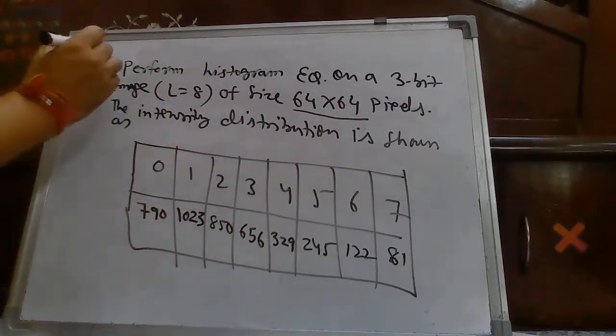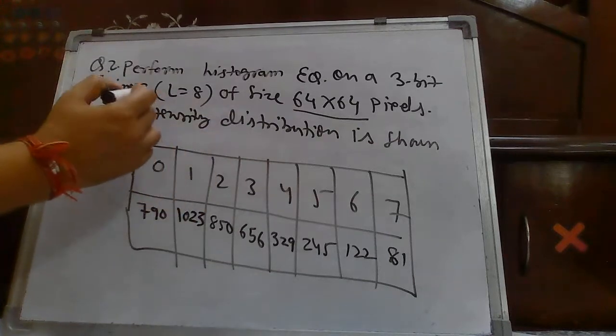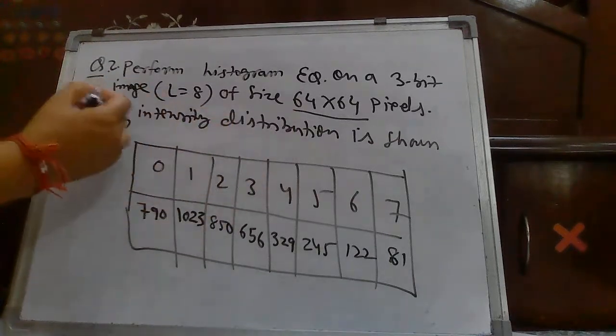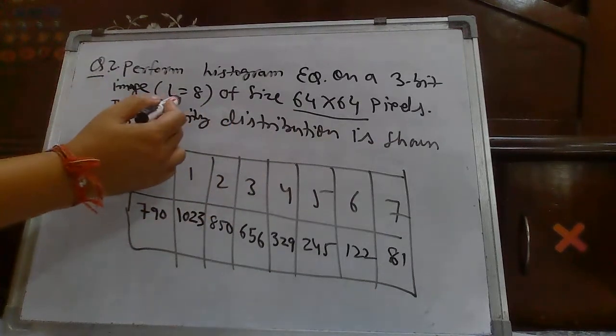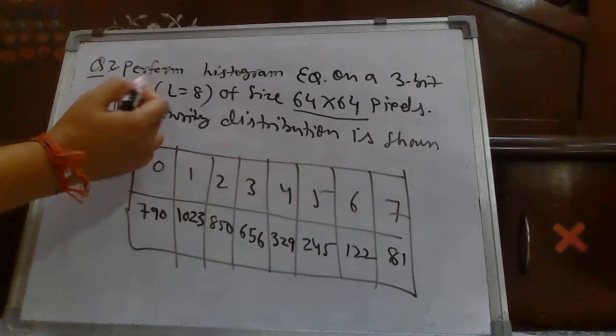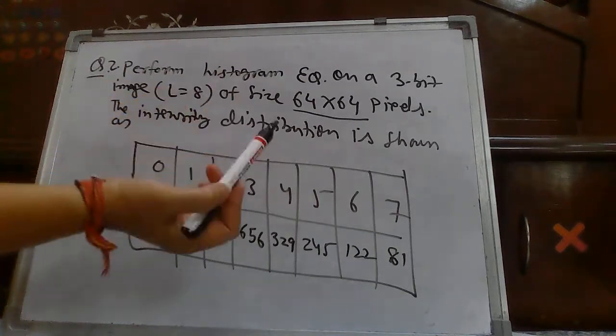So, we will see another question. This is question number 2. We will perform histogram equalization on a 3-bit image. 3-bit image means how many number of gray labels are there? 0 to 8. Maximum representation 0 to 7.